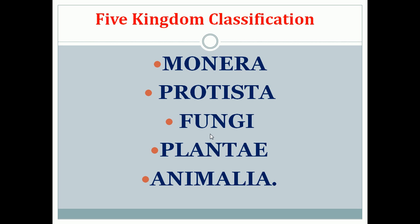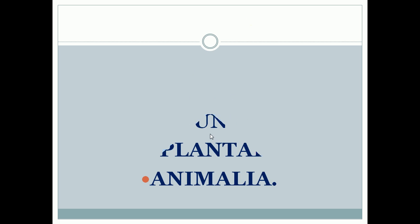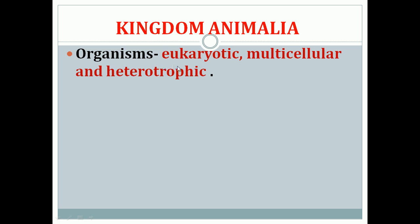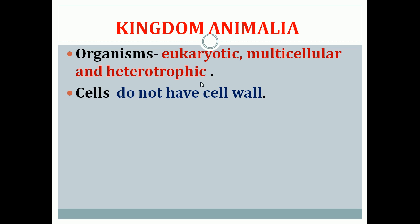In this class we are going to see about the classification of Kingdom Animalia. Kingdom Animalia organisms are eukaryotic, multicellular and heterotrophic. Eukaryotic means they contain a well-defined nucleus. All organisms which are eukaryotic, multicellular and heterotrophic in nutrition come under Kingdom Animalia. The cells of these organisms do not have a cell wall, and most animals are mobile — they will move from one place to another.